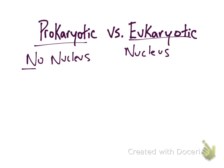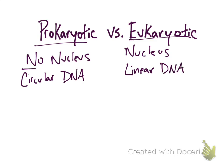Another difference is that prokaryotic cells have circular DNA, while eukaryotic cells have linear DNA. Also, prokaryotic cells, even though they don't have a nucleus, they still do have DNA, which is floating around in the cytoplasm.